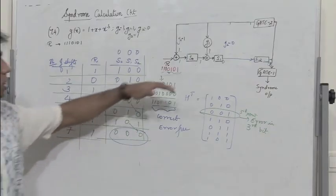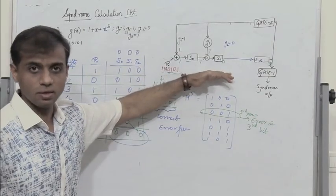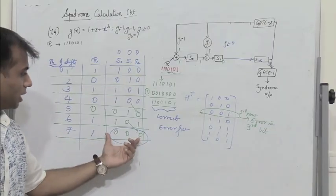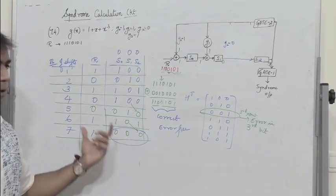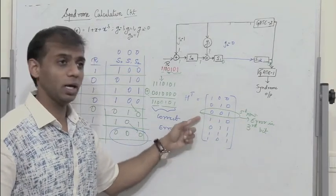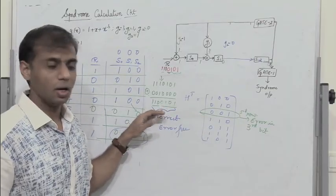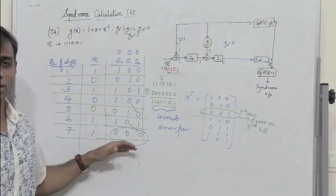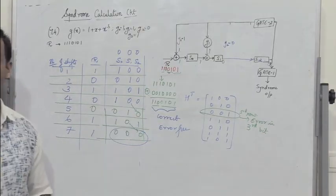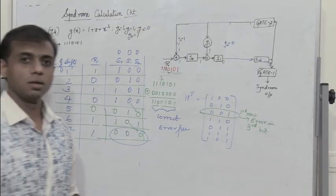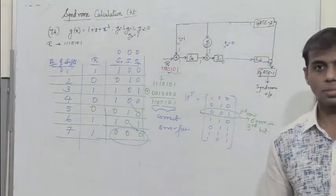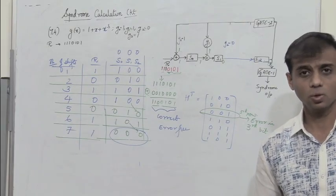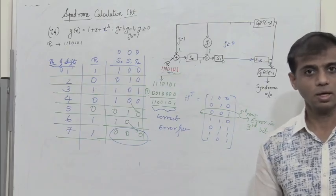This is how we can design a syndrome calculator circuit. If there is an error, the syndrome output will be non-zero, and by identifying the bit sequence in the H-transpose matrix we can identify and correct the error position. If the received vector is correct, the syndrome output will be completely zero, indicating no error. Please share, like, and subscribe and press the bell icon to get notifications. Thanks for watching.